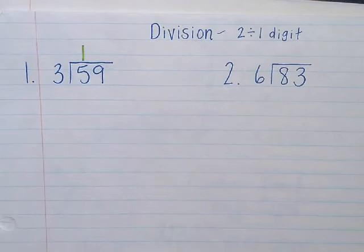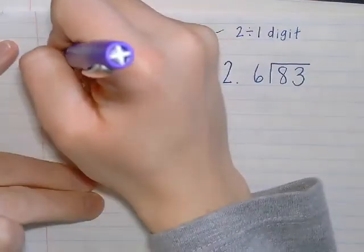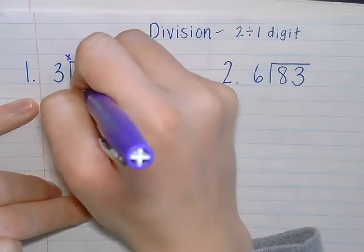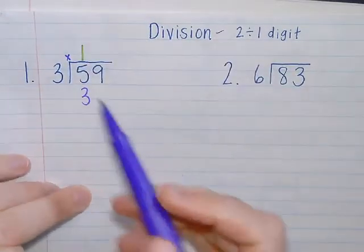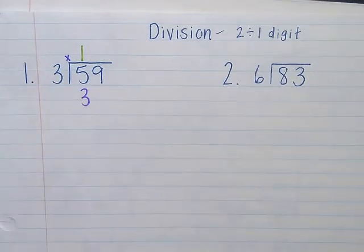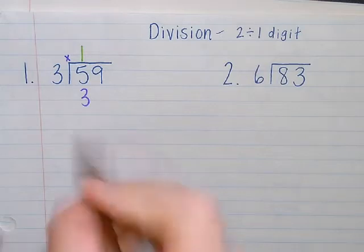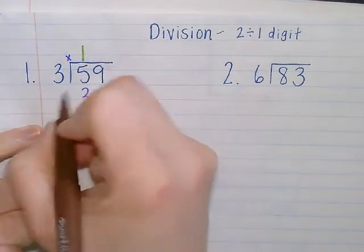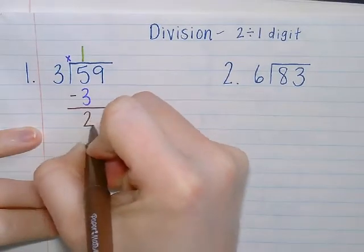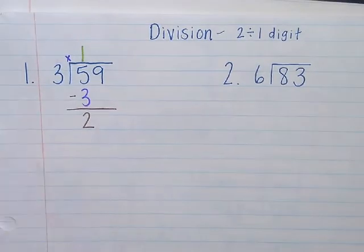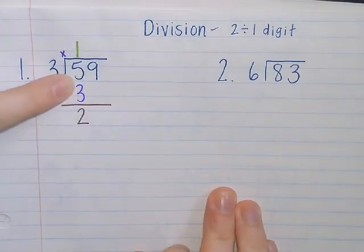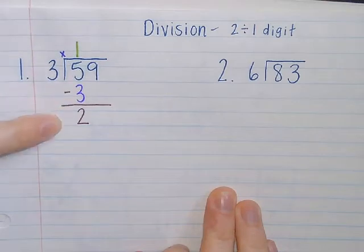So I need to check that. My next step will be to multiply three times one, which gives me three. And that three goes right below the original five that I was trying to make. My next step is to subtract five minus three, and I'm left with two. I've made it this far. I should check my math. I know that three times one is equal to three. Five minus three is equal to two. Perfect.